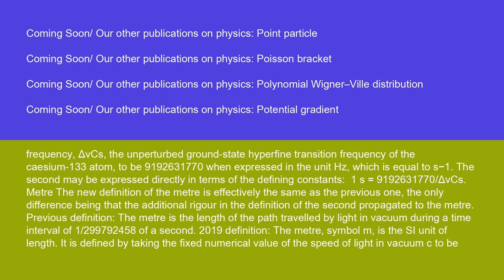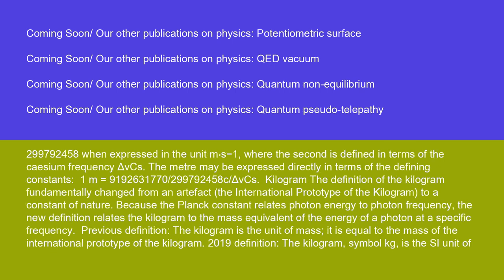The new definition of the meter is effectively the same as the previous one, the only difference being that the additional rigor in the definition of the second propagates to the meter. Previous definition: The meter is the length of the path traveled by light in vacuum during a time interval of 1/299,792,458 of a second. 2019 definition: The meter, symbol m, is the SI unit of length. It is defined by taking the fixed numerical value of the speed of light in vacuum c to be 299,792,458 when expressed in the unit m·s⁻¹, where the second is defined in terms of the cesium frequency Δν_Cs. The meter may be expressed directly in terms of the defining constants: 1 m = (9,192,631,770 / 299,792,458) × (c / Δν_Cs).